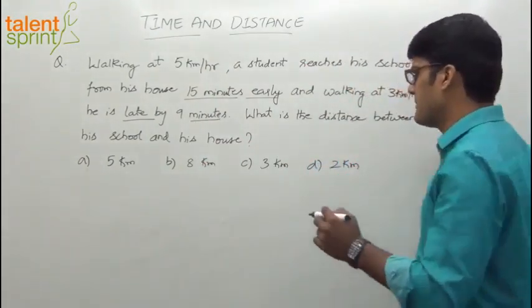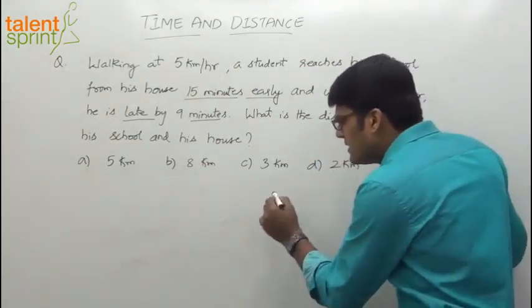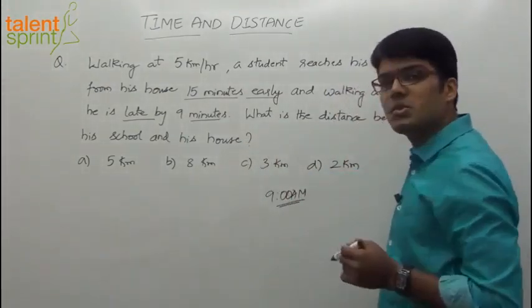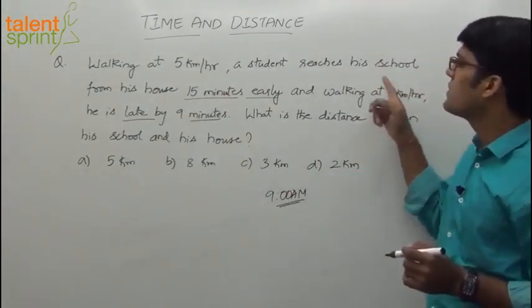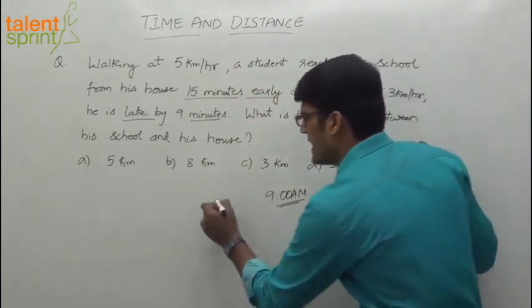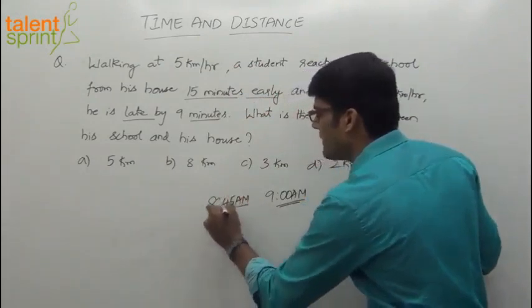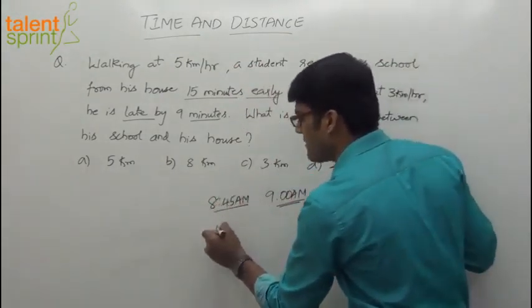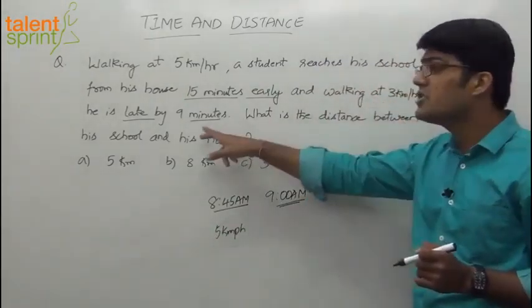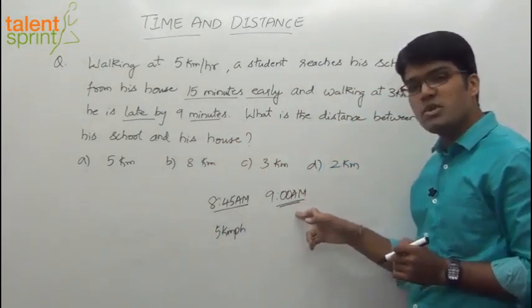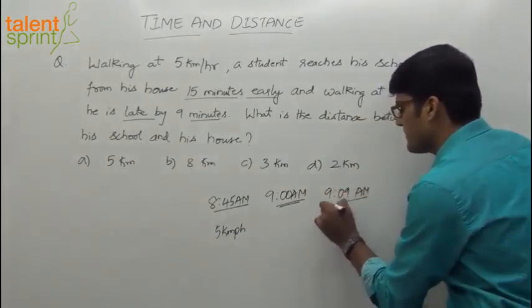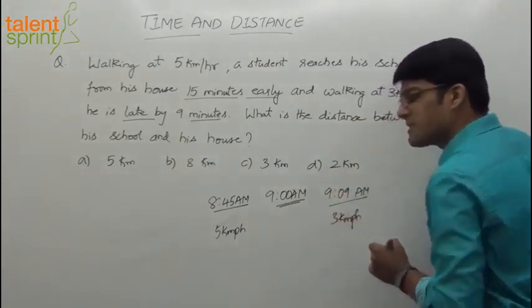Let me explain with a simple example. Say the school starts at 9 am — this student is supposed to reach school at 9 am. When walking at 5 kmph, he reached 15 minutes early, meaning he reached at 8:45 am. In the second case, walking at 3 kmph, he reached late by 9 minutes — he was supposed to reach at 9, so he reached at 9:09.